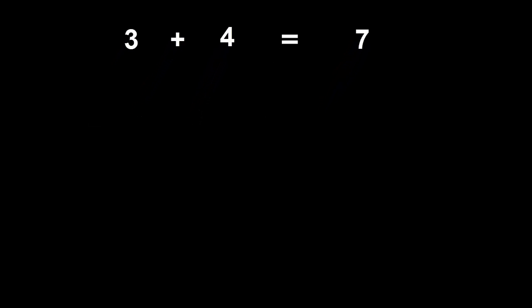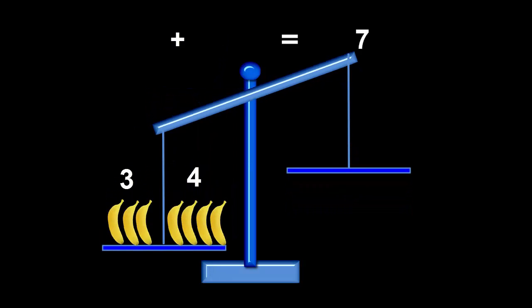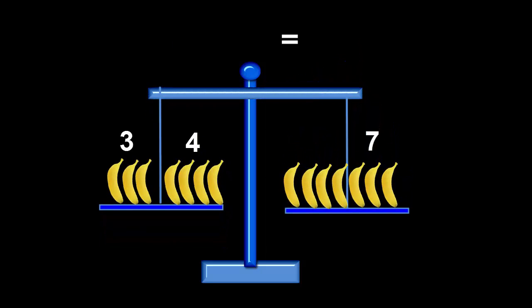Another way to think of an equation is to imagine a weight balance. Putting Celeste and Jack's bananas on the left pan will make it move down, showing that the left side is heavier than the right side. Putting Thomas's bananas on the right pan will make them level again, showing that the left pan is equal to the right pan. It's only an equation when the two sides are level.